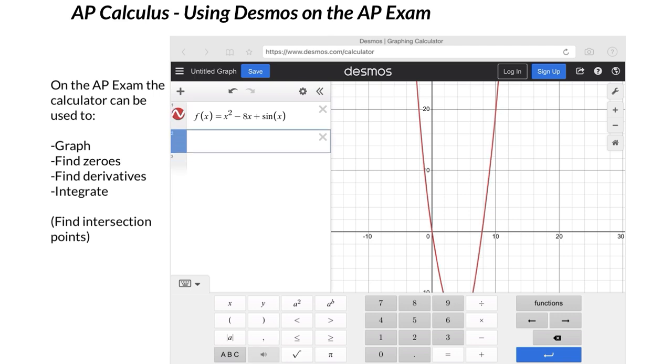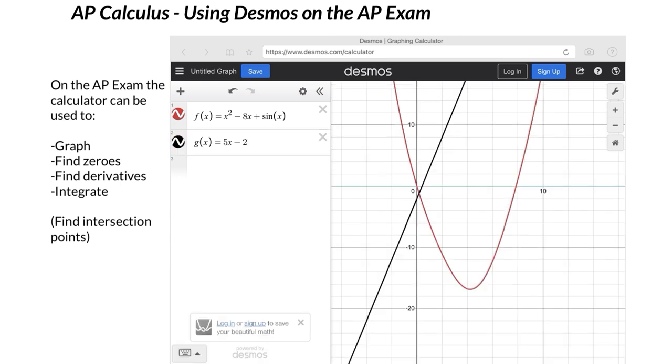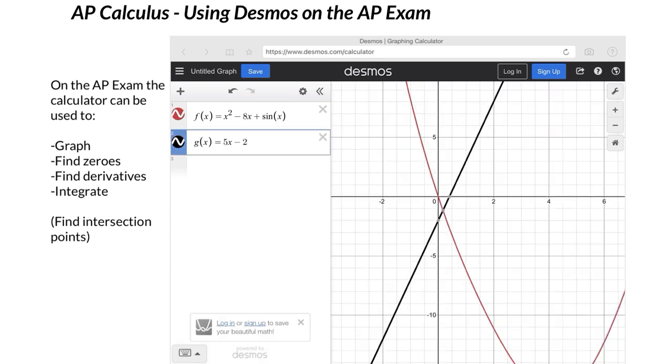I also said find the intersection points. Let's say I find a new function. We'd want to use a different name. Let's say 5x minus 2, like that. And let's say we wanted to figure out the intersection point. If I zoom in on this, I can just tap and there's the intersection point between those two curves, the x and the y.